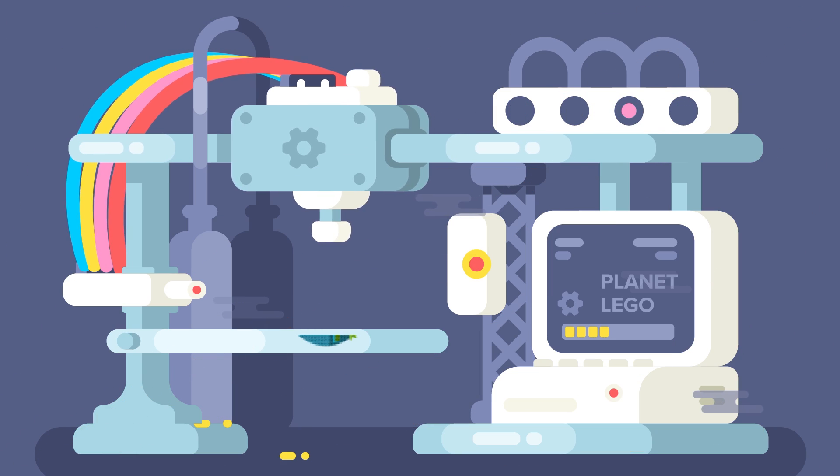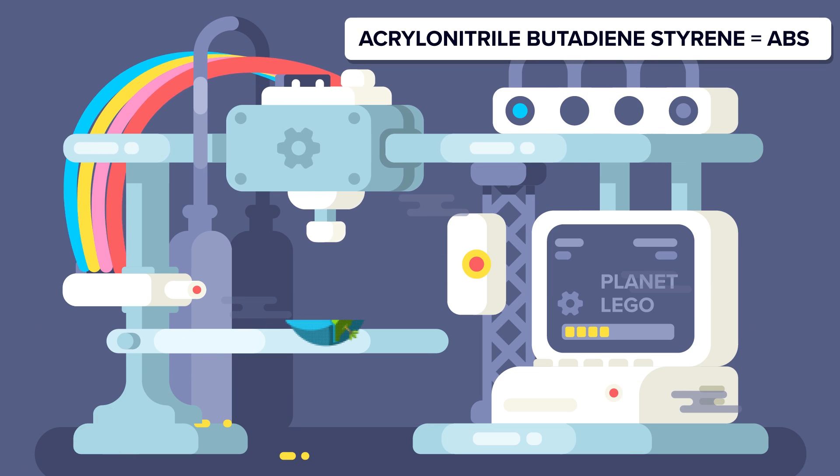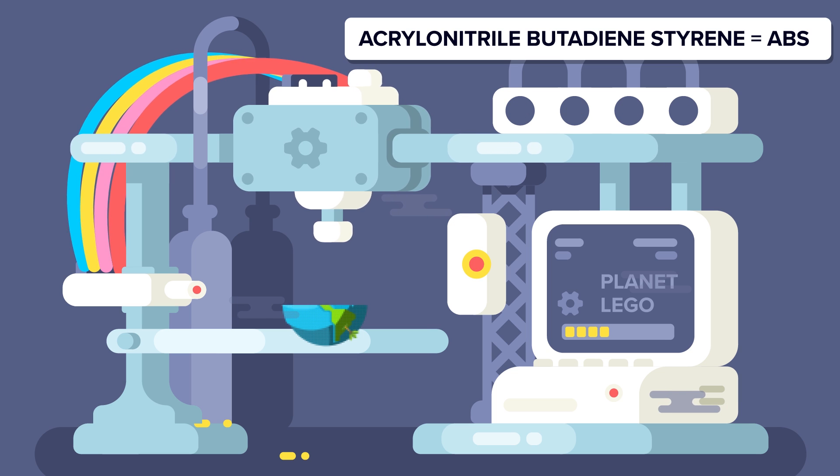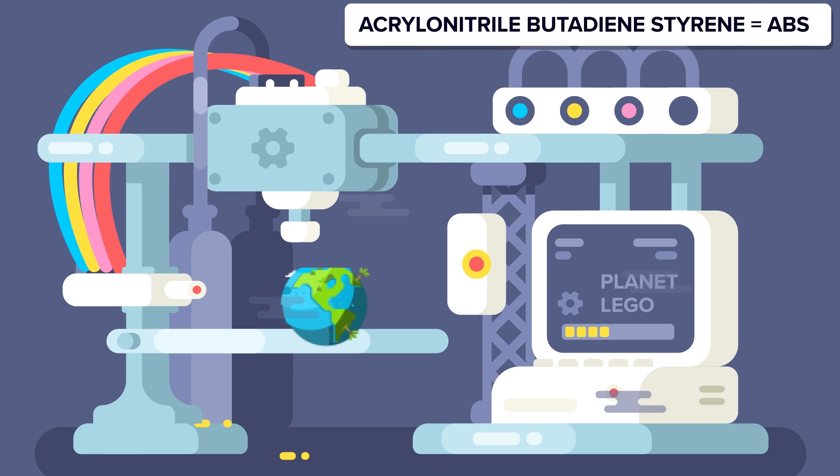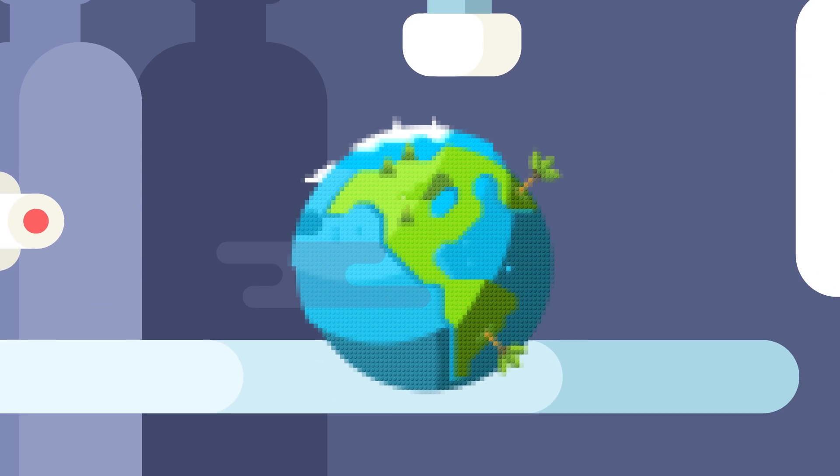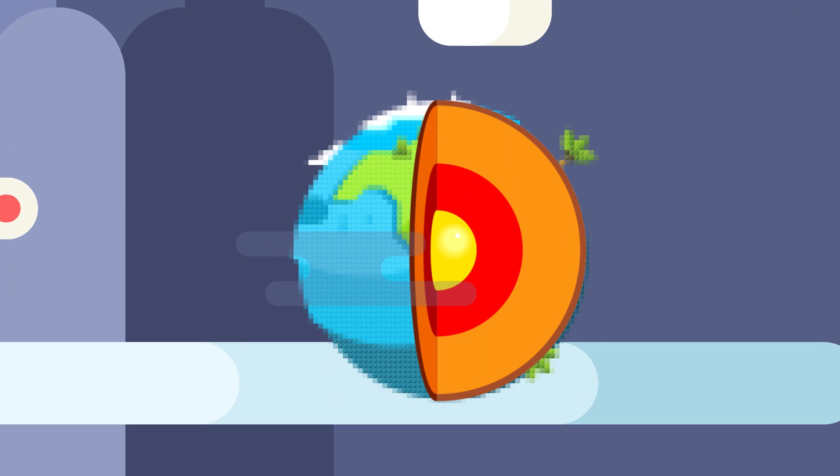Lego bricks are made from a plastic known as acrylonitrile butadiene styrene, also known as ABS, which has many common uses on Earth such as manufacturing and 3D printing, because it is very pliable when heated. Though at 15,000 degrees, the ABS would likely combust and burst into flames, but in our model, there is no oxygen, only Legos.